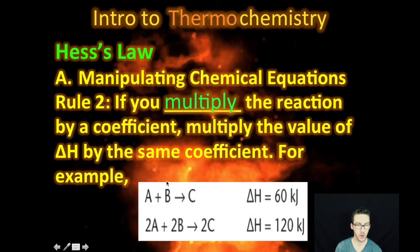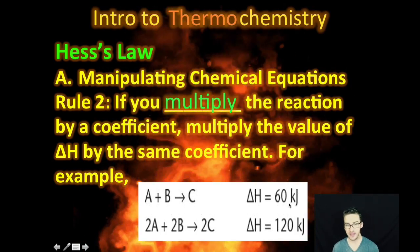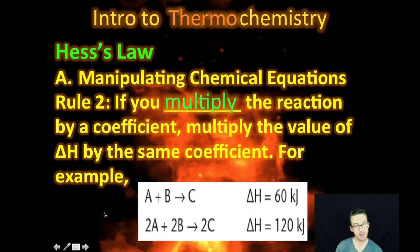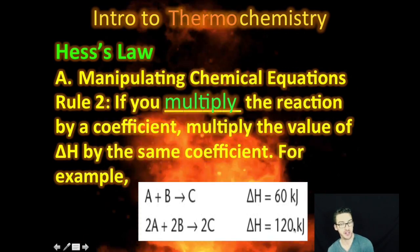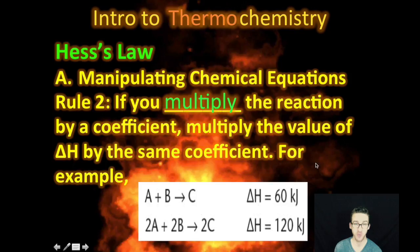For example, as you look at the equation that is given, again, the enthalpy change is 60 kilojoules. But if we multiply it through by a factor of two, we have to multiply our enthalpy change by a factor of two as well.